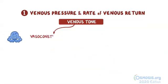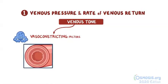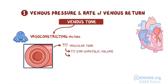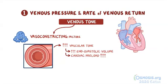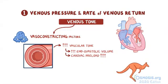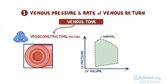On the other hand, vasoconstricting factors — such as sympathetic stimulation during the fight-or-flight response — constrict smooth muscle cells within vessel walls, increasing venous tone and venous return to the heart. This leads to increased end-diastolic volume and therefore increased cardiac preload, helping send more oxygenated blood to organs and tissues. On the pressure-volume loop, increased end-diastolic volume and preload shifts the loop to the right.